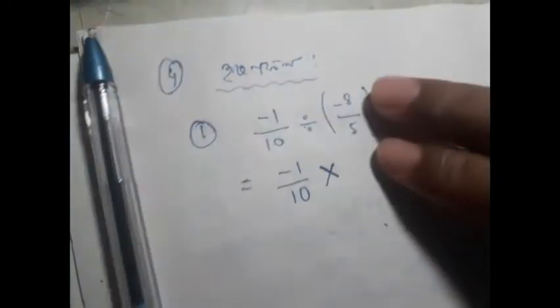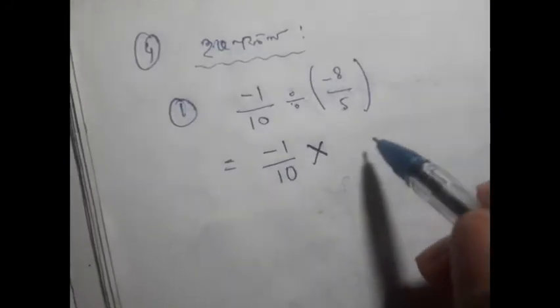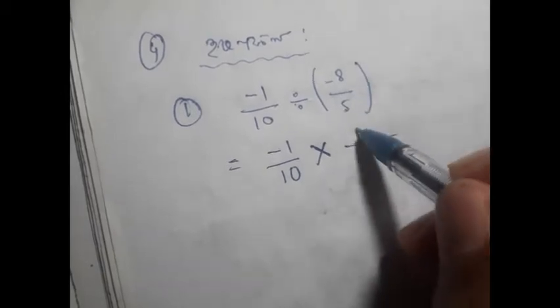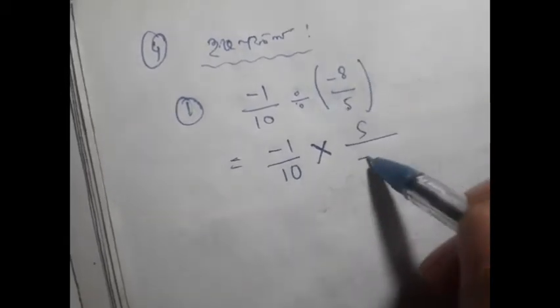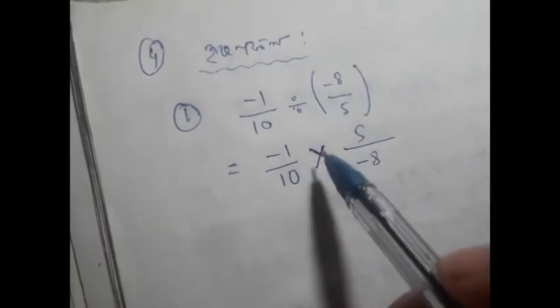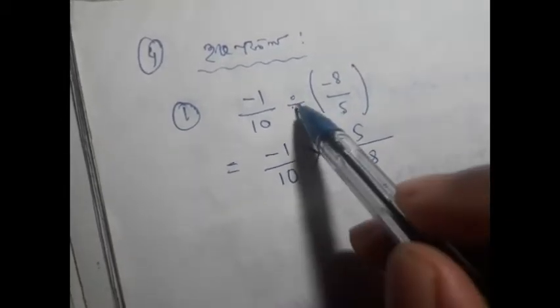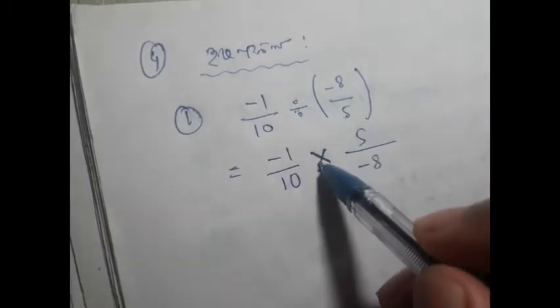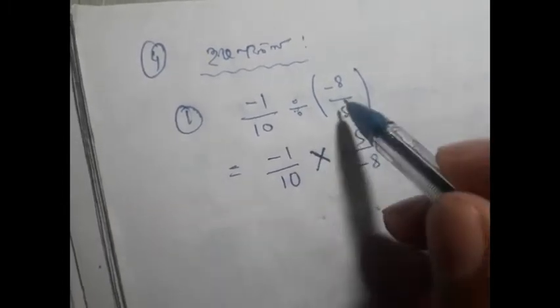This number is minus 1 by 10. So, first, we have minus 8. So, what do we do now? Now, put the same number and write the same number. Then, write the same number.